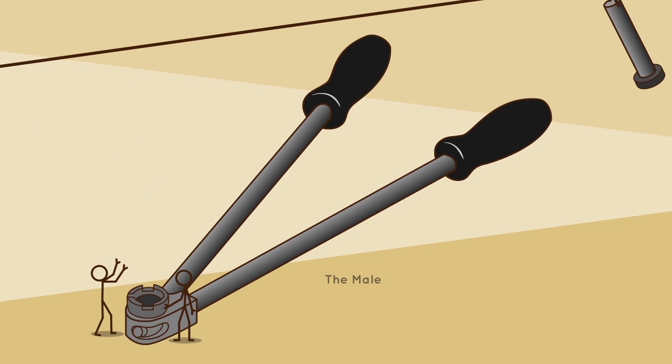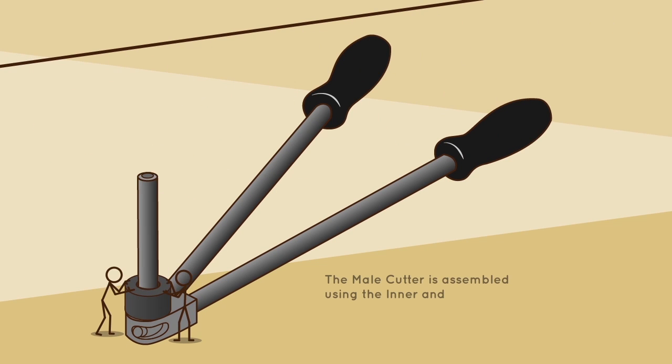Male cutter assembly. The male cutter is assembled using the inner and outer sleeve corresponding to the implant size.